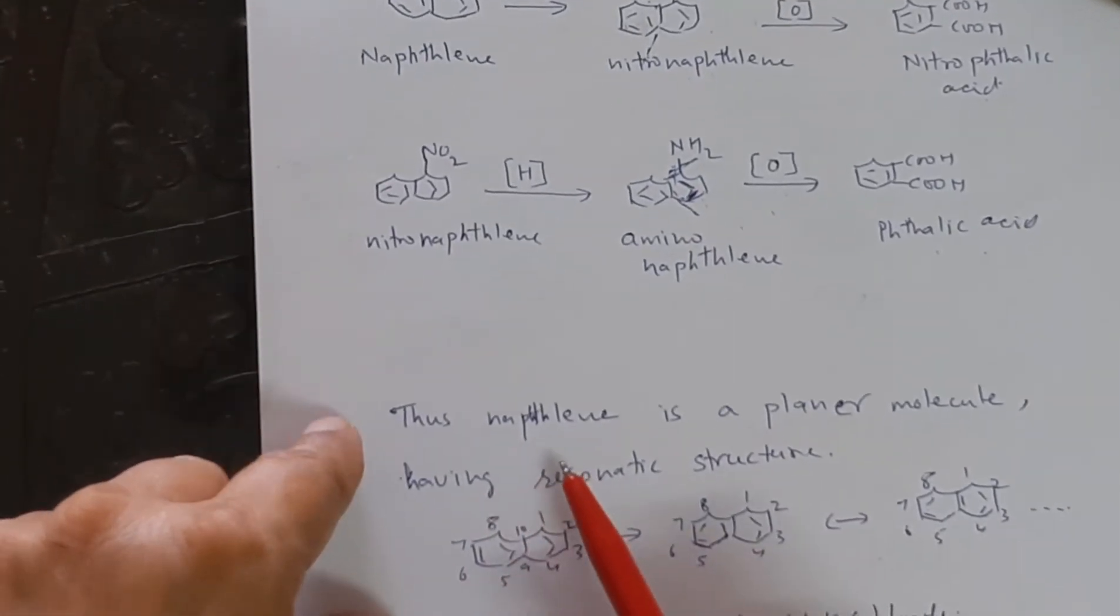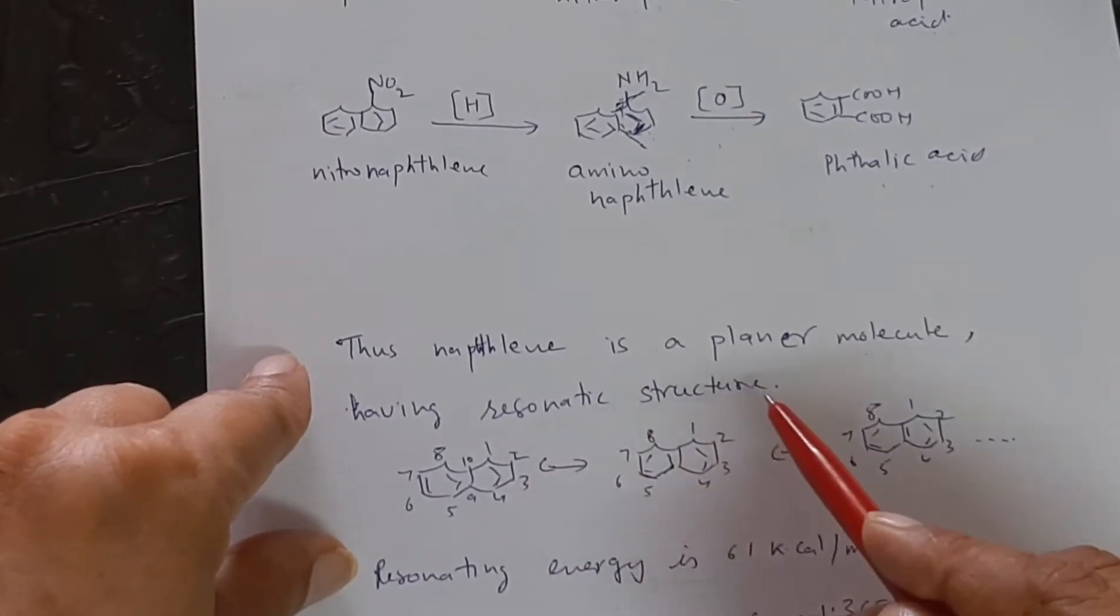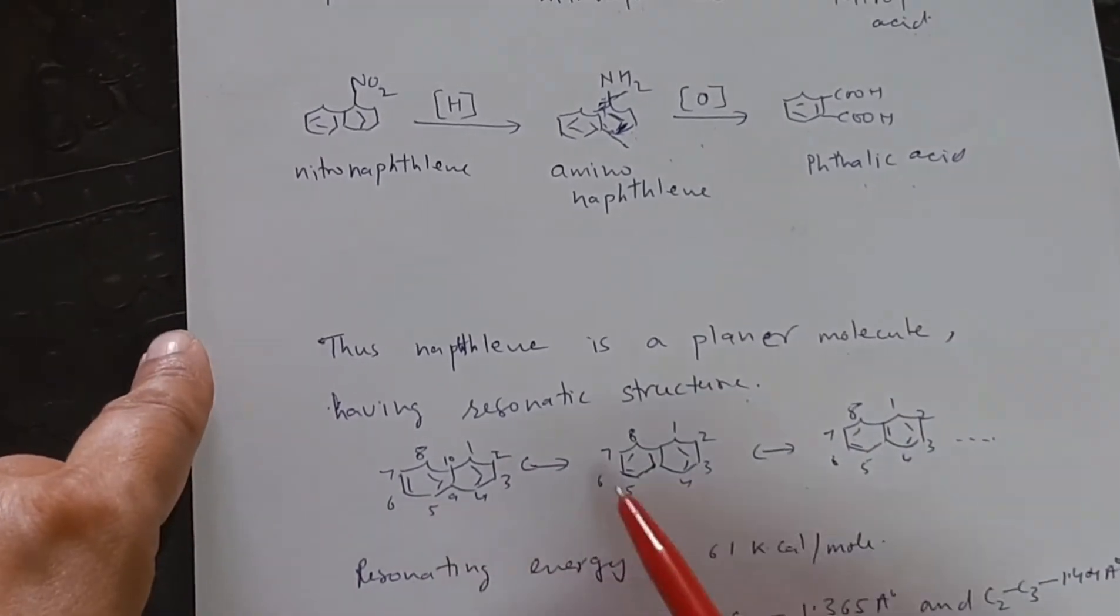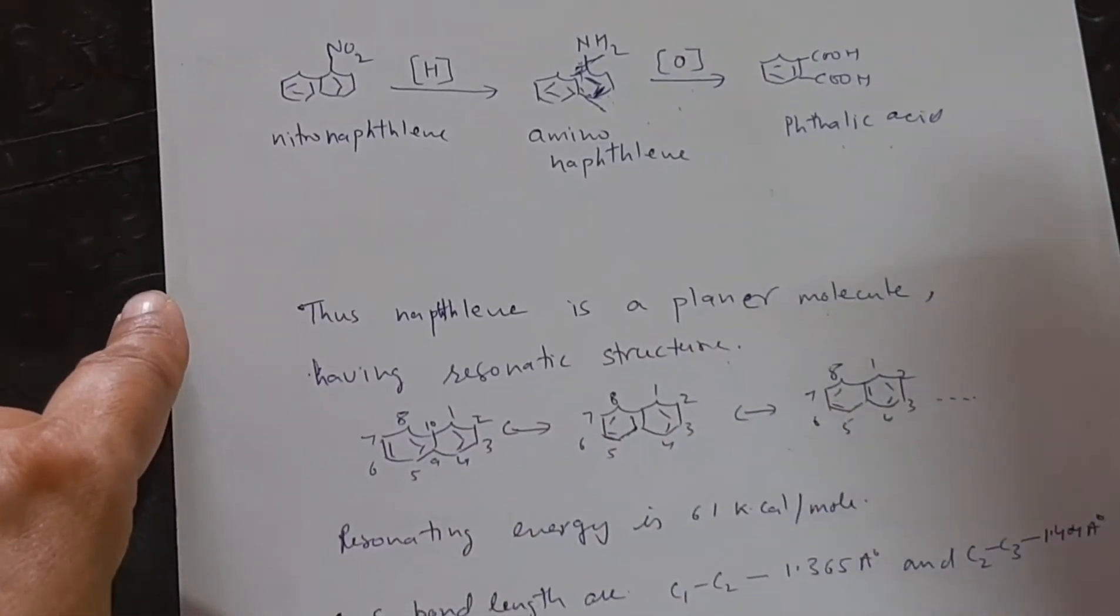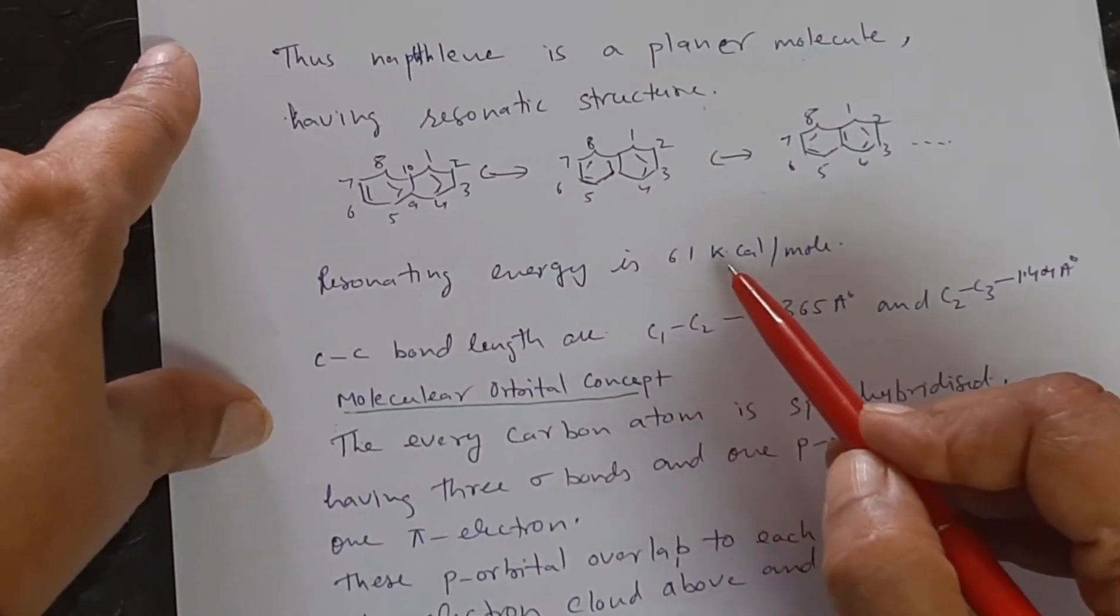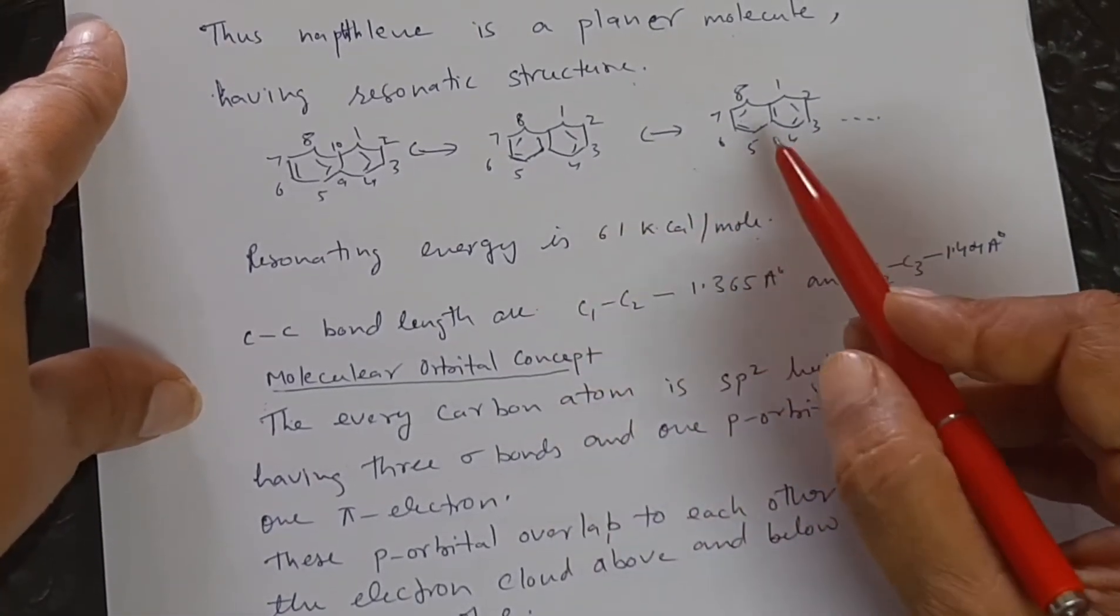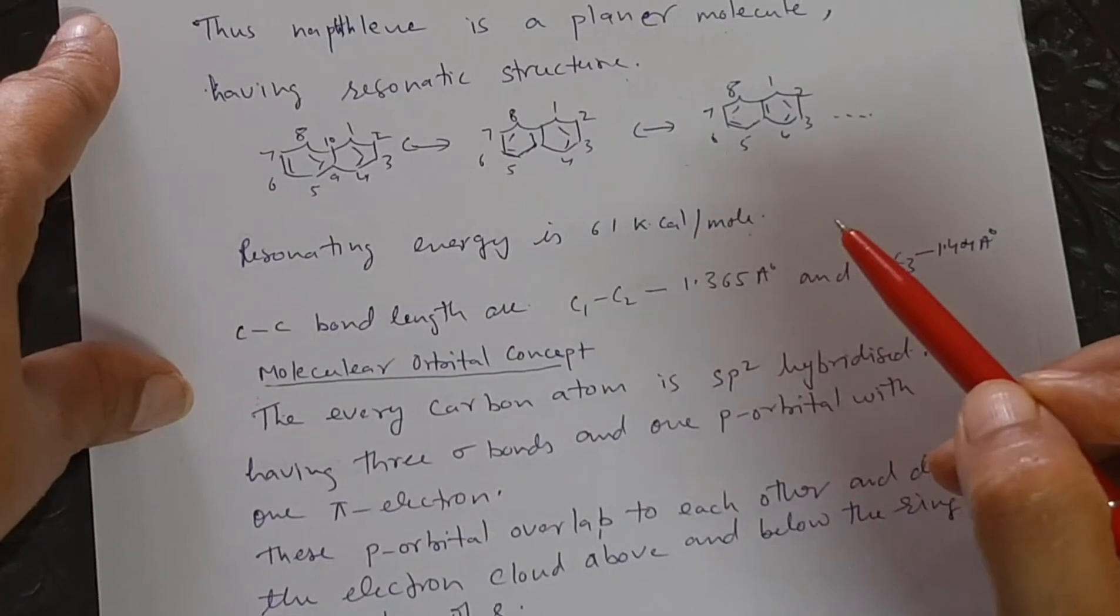Also, the structure of naphthalene is planar and having resonating structures like this. The resonating energy of naphthalene is 61 kilocalorie per mole. We know that the resonating energy of benzene ring is 36 kilocalorie per mole.